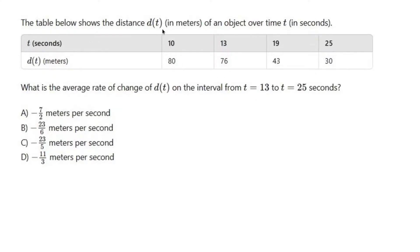The table below shows the distance d(t) in meters of an object over time t in seconds. So we have time t in seconds: 10, 13, 19, 25. No pattern, no special order here except that it is in order. And these just go down in some particular non-order either. It doesn't matter.